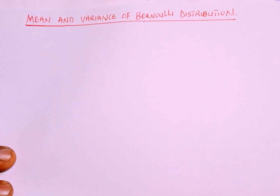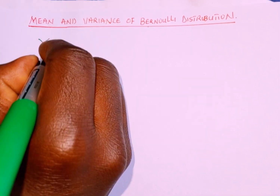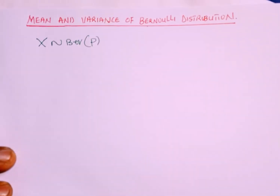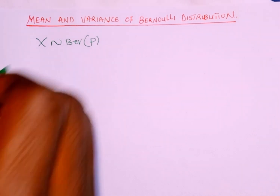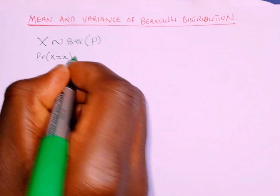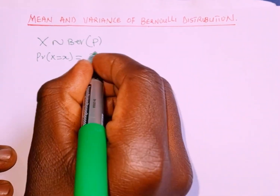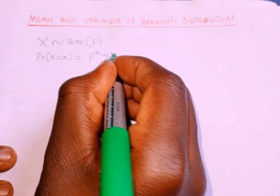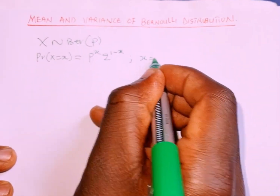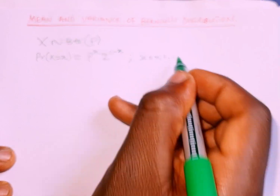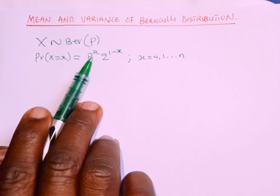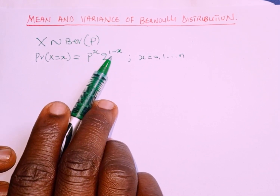In Bernoulli distribution, x is distributed Bernoulli with parameter p. The probability function — probability of X equals x — is given as p to the power x, q raised to the power of 1 minus x, where x takes values 0 and 1. So this is the PMF of Bernoulli: p^x · q^(1−x).